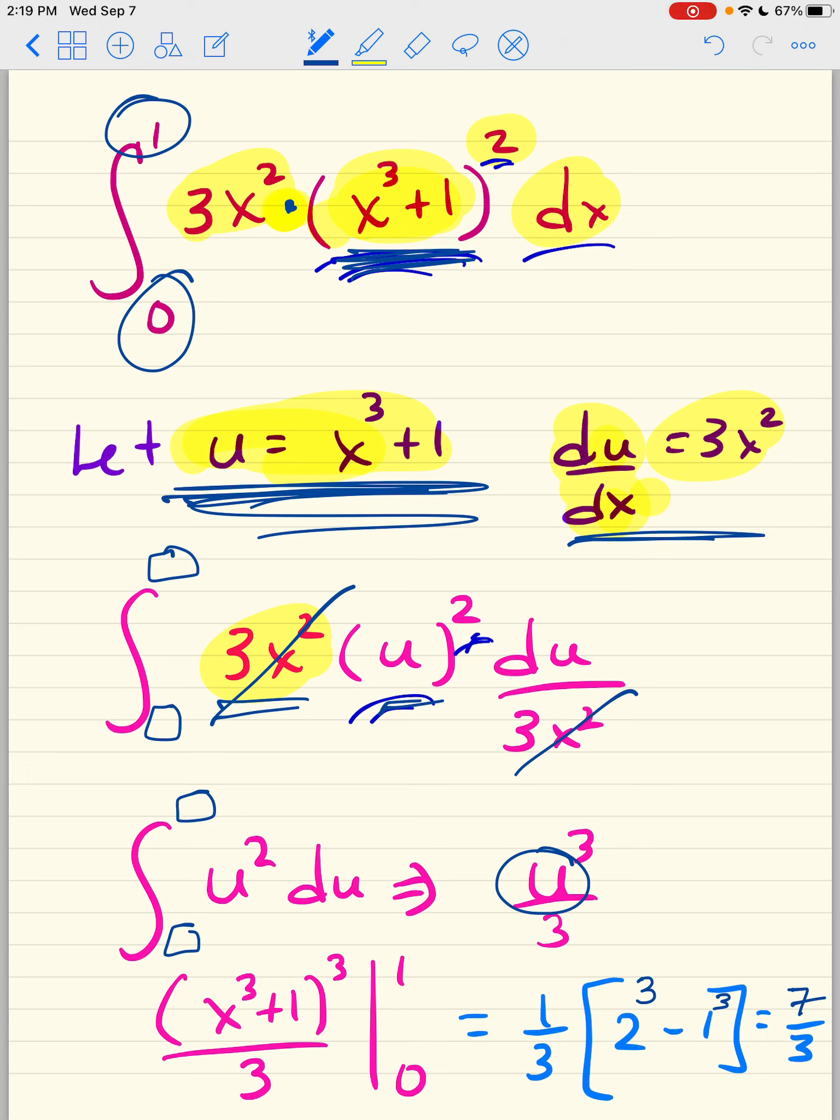So I'm just going to now turn this back into x, so u is x to the third plus 1, raised to the third power, and I'm going to plug in a 1. So I pulled out the 1 third, and then I plugged in the 1. 2 to the third is 1 plus 1 is 2, raised to the third power, and then plug in your 0. 1 to the third. Now we're going to subtract it. That's 8 minus 1 is 7, so that's 7 times 1 third gives you 7 thirds.